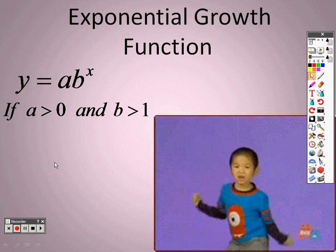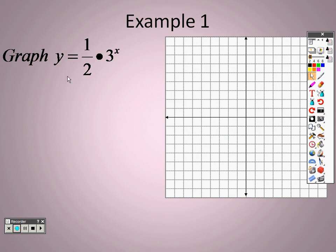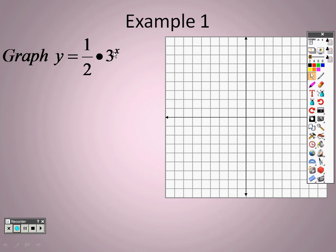To graph this first example, press y equals. Then type: open parentheses, one divided by two, close parentheses, then times, then three with the caret sign — which moves you up to an exponent — then plug in x, which is right beside the alpha key.